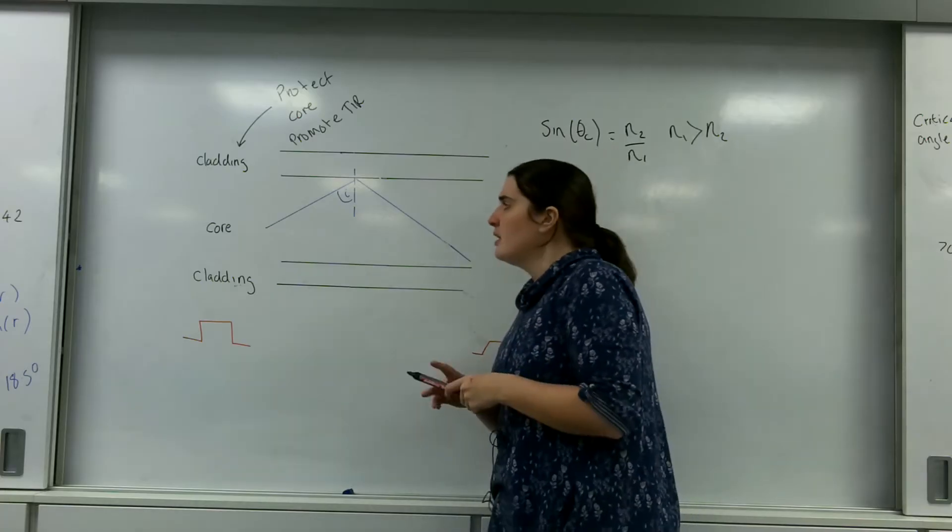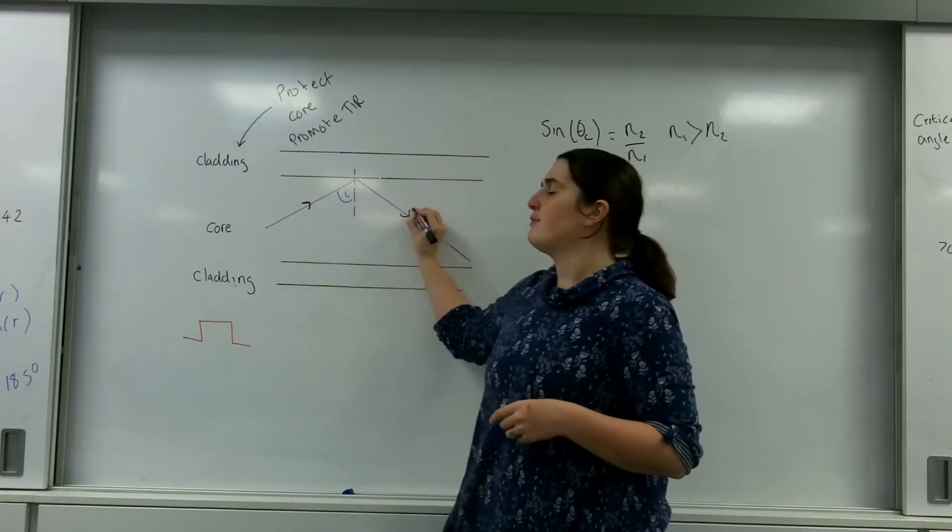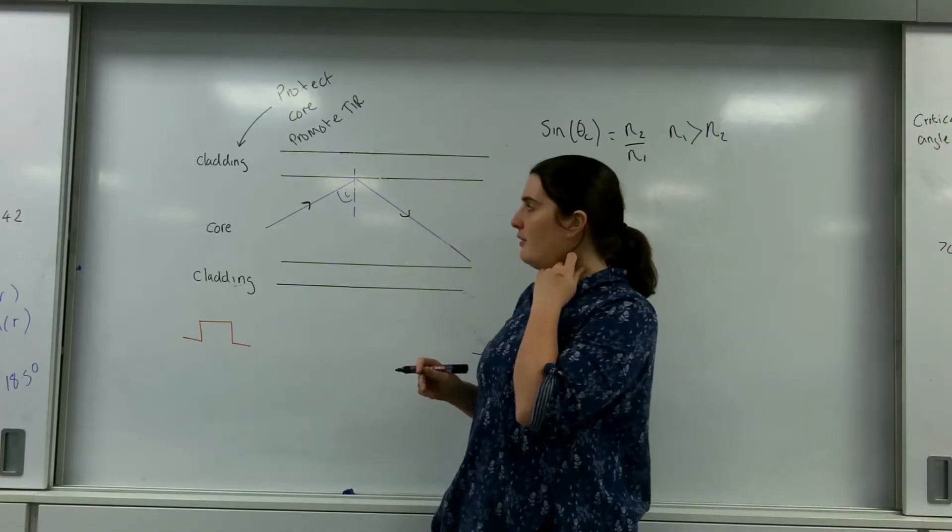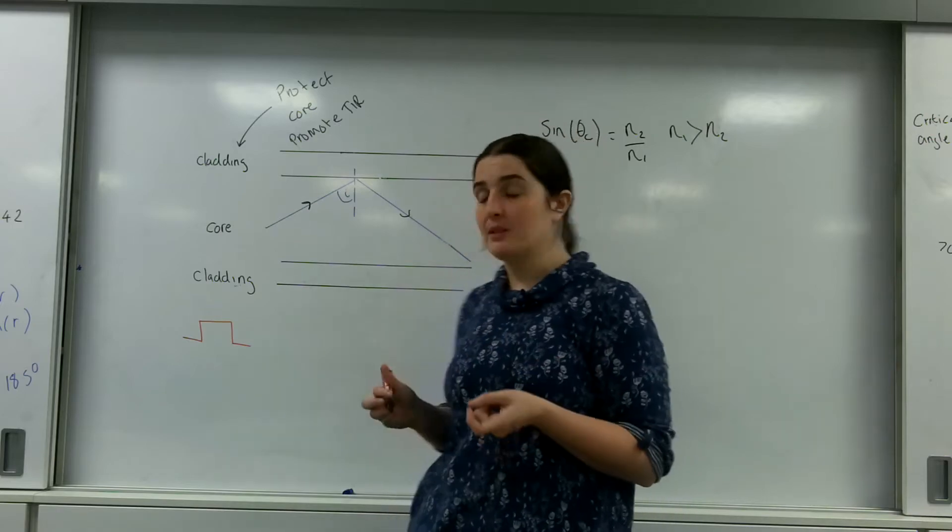Okay, so with a core, the light comes in and is hopefully reflected. And this, of course, can change if you have curls and bumps in the fiber.